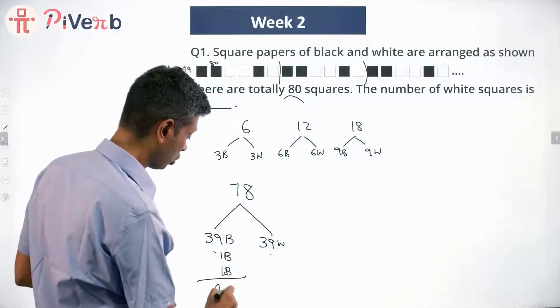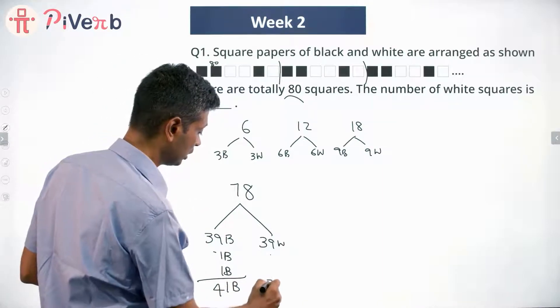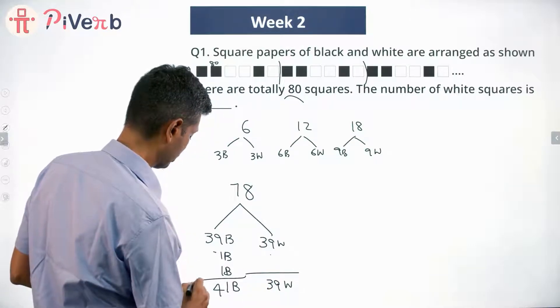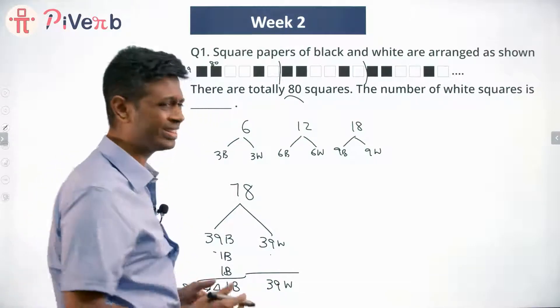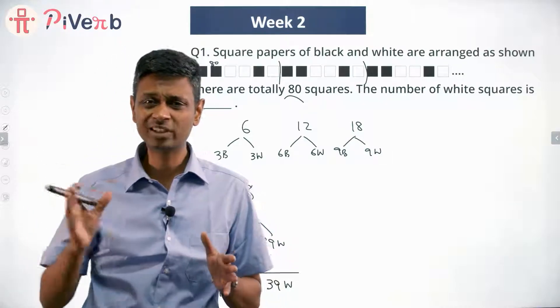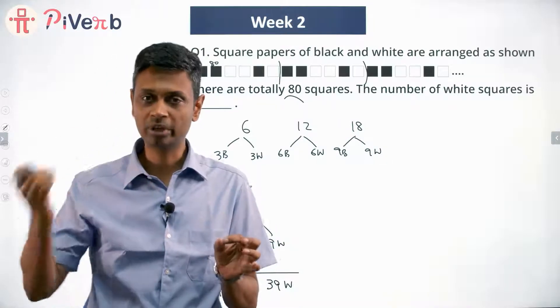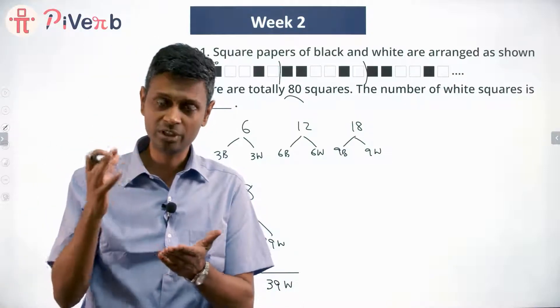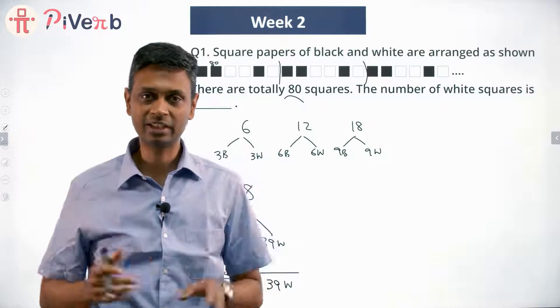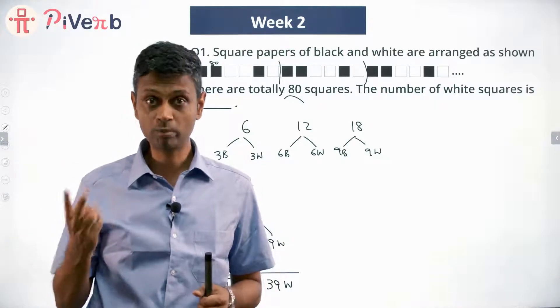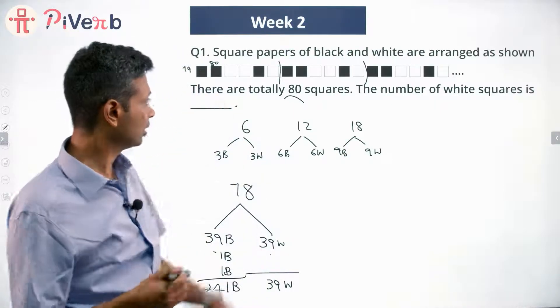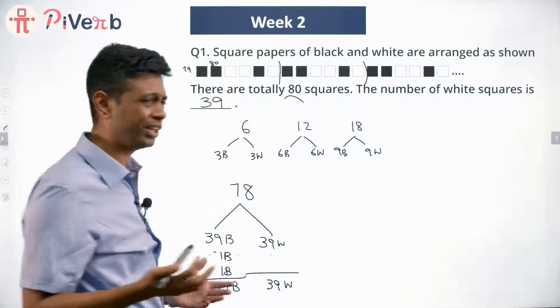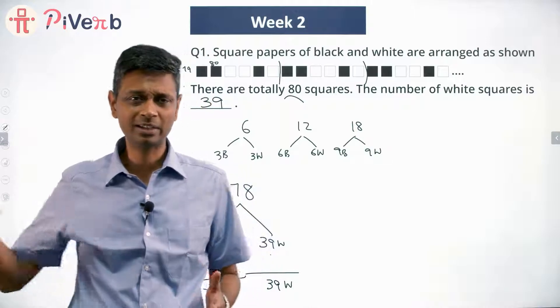So there will be totally 41 black and 39 whites when there are 80 squares. Go in steps of six, grab six at a row, complete that, and then think about what is remaining. So if you're looking at 80 squares, it is 13 sets of six squares each that will break as 39 and 39. After that, there are two black squares, 79th and 80th. The question says how many white squares? There are 39.